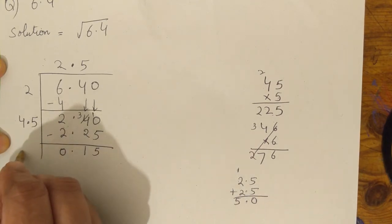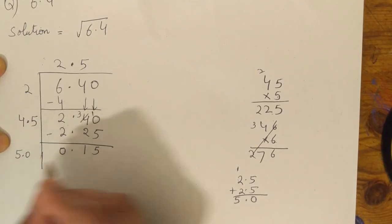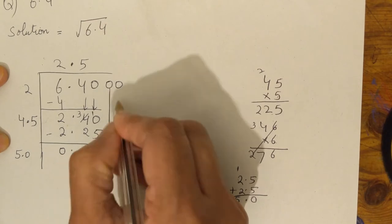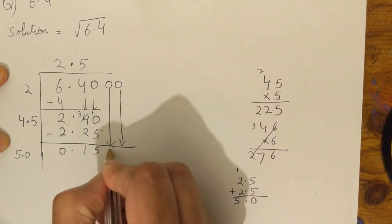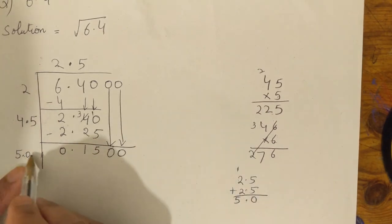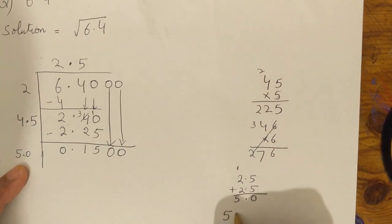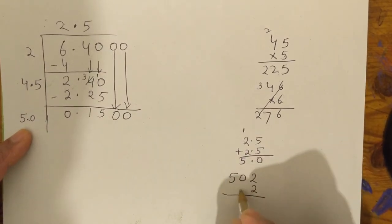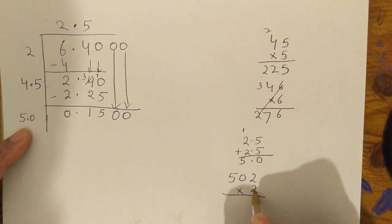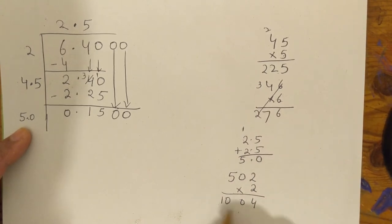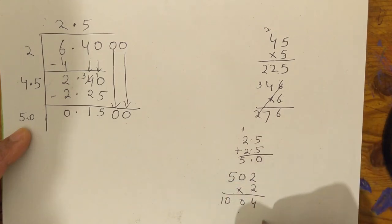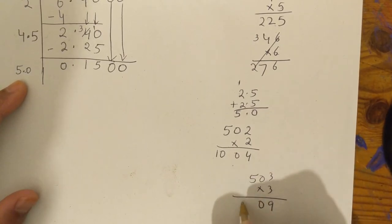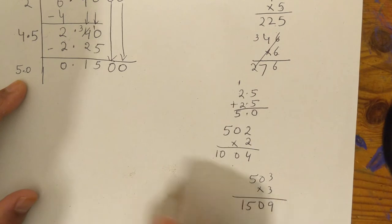We will write 5.0. Then we will write 2.0 in the same way. 2.0 will be written. We will write 5.0. 2 times 2 is 4, two times zero is zero, and five times two is ten. This number is close, but let's check it from three. Five, zero — three times three is nine, three times zero is zero, five times three is fifteen. Now this number has more.